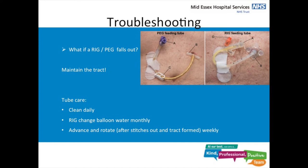As you can see in the pictures, for the PEG tube: A is the feeding port, B is the bumper which holds it in place, and C is the clamp. For the RIG: A is again the feeding port, D is the balloon volume port where we change the water, and B is the bumper that holds it in place. They do look slightly different from each other.